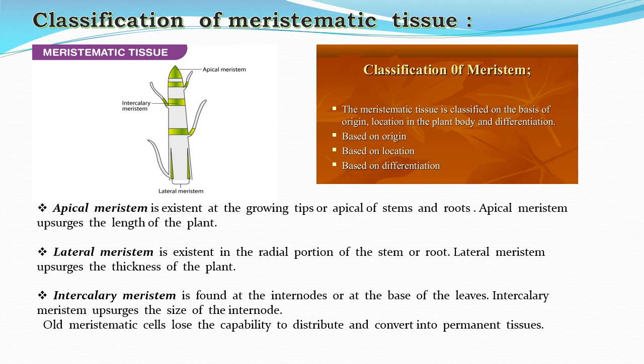Intercalary meristems are also a type of meristematic tissue with specialized cells that keep on dividing to form new cells. They are present at the base of leaves and at the sides of internodes, and they increase the size of the internodes.